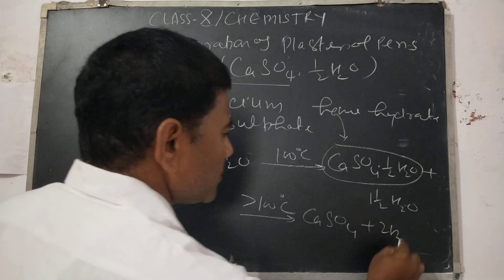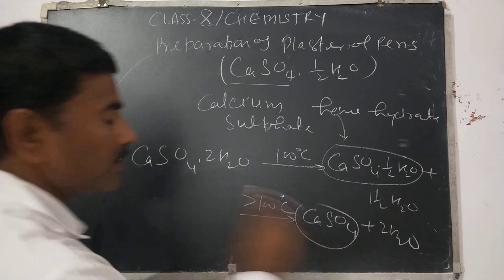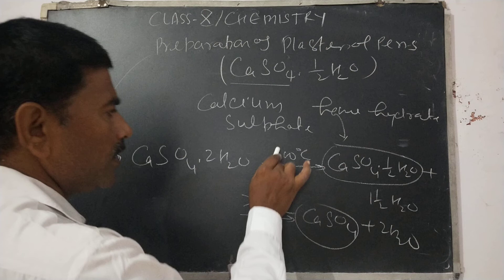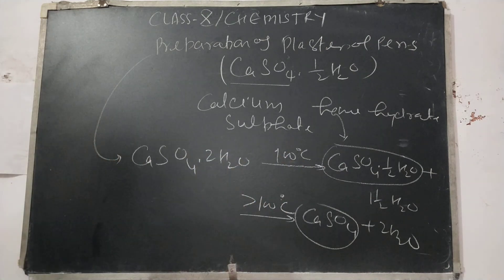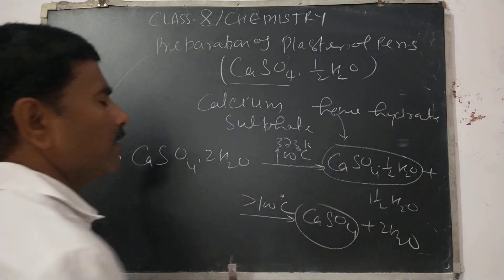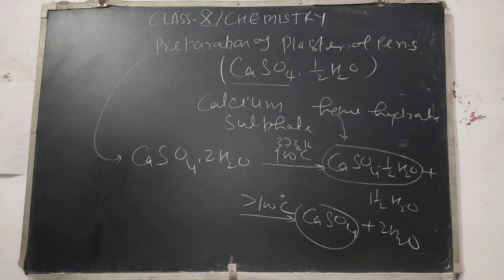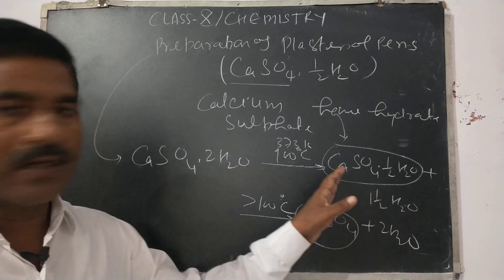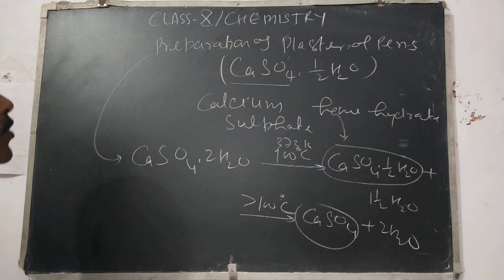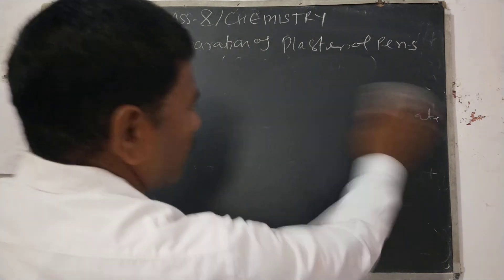When heated above 100°C, CaSO₄ plus 2H₂O is formed, which we call anhydrous calcium sulphate. So always remember the temperature must be exactly 100 degrees centigrade or 373 Kelvin for Plaster of Paris (P.O.P.) formation.